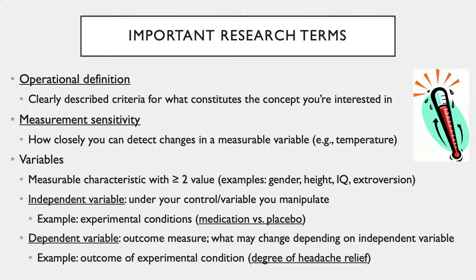In our example exploring the use of pain relievers for headaches, the dependent variable would be the degree of headache relief the participants experience. If the pain reliever is effective, there should be a significant difference between the degree of relief experienced in the group given the pain reliever compared to the group given the sugar pill.